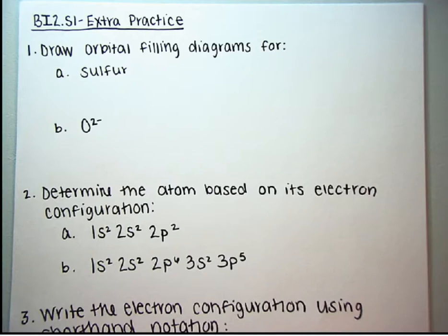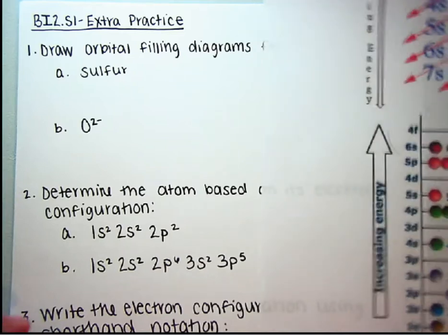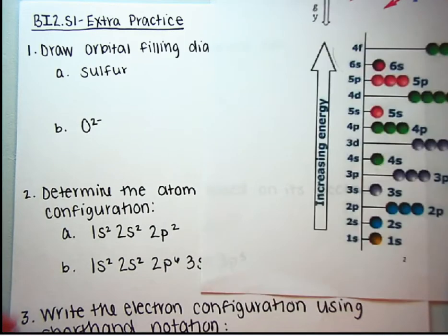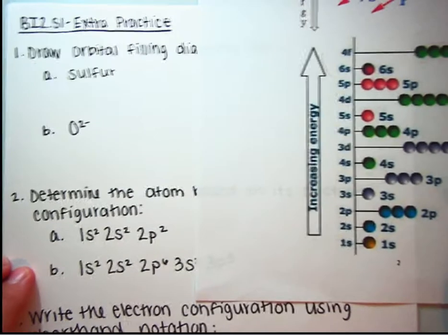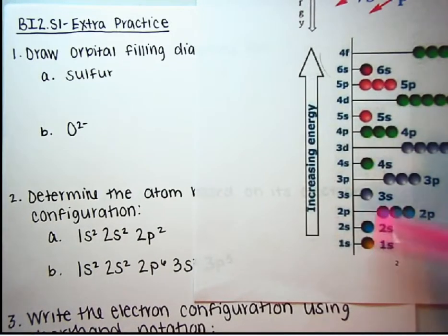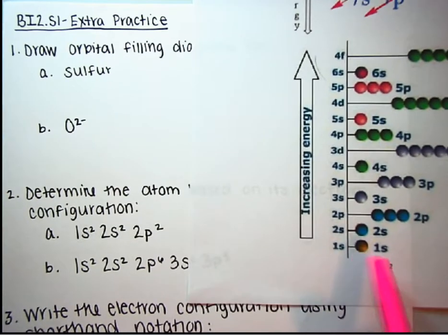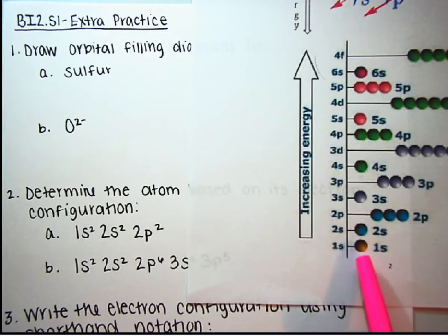Number one, we are going to draw orbital filling diagrams for A, sulfur, and B for an oxygen ion with a charge of negative 2. So remember our rules. We want to fill our orbitals in order of increasing energy. The nice thing about this diagram is not only does it tell you the order of increasing energy, it also tells you how many orbitals you have. The little spheres tell you the number of orbitals.